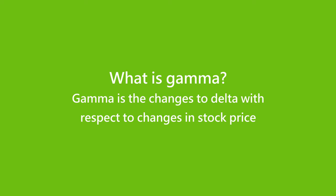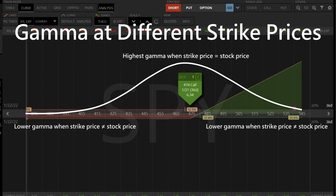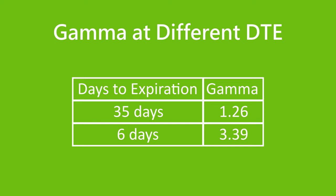Gamma is the change to delta with respect to changes in stock price — it is also the acceleration of options prices with respect to changes in stock price. Using SPY calls with equal expiration dates, at-the-money calls have the greatest gamma, and gamma reduces as the stock price moves further from market price. For options at identical strike prices, the closer to expiration, the larger the gamma. An ATM call expiring next month has 1.26 gamma, while one expiring in 6 days has 3.39 gamma. As an option gets closer to expiration, gamma expansion increases the impact of delta on option prices, leading to big unpredictable gains and losses with small price fluctuations. So we usually close our options trades around 14 days before expiration to minimize gamma risk.